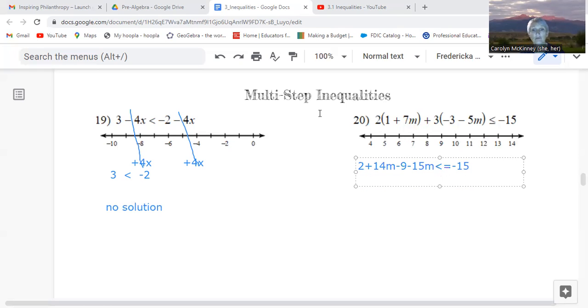So we've distributed it. Now we're going to combine like terms. I see that I have a positive 2 and a negative 9. Those are both constants. They can combine to make negative 7. 14m and negative 15m would be just minus m or minus 1m if you prefer. Still less than or equal to negative 15.